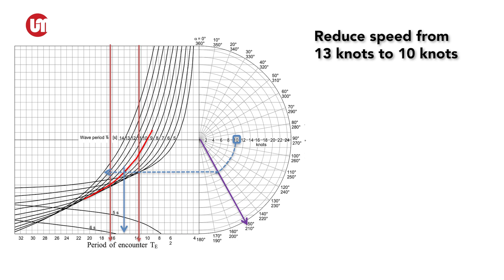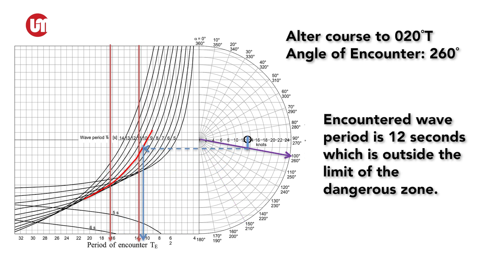The ship can also alter course to 020 degrees so that the encountered wave period is 12 seconds, which is less than 12.7 seconds as the lower limit of the zone to be avoided. The ship does not encounter parametric rolling and the speed of 13 knots can be maintained.